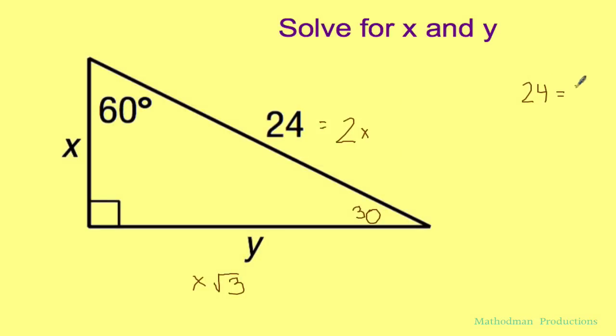Divide 2 to both sides and now we get 24 divided by 2 is 12. These cancel out and you got x as 12.